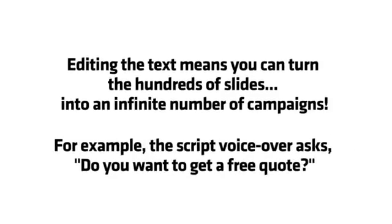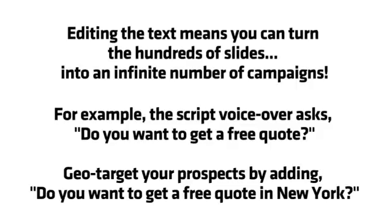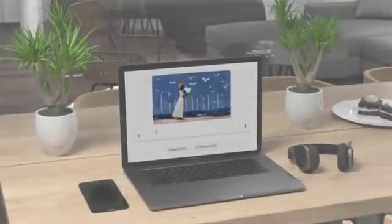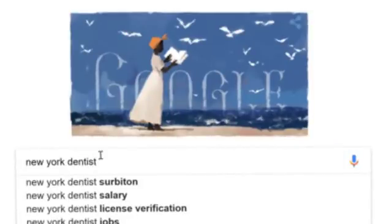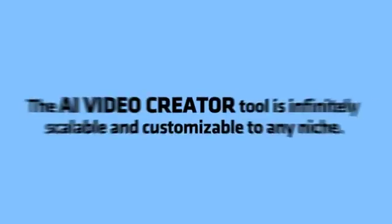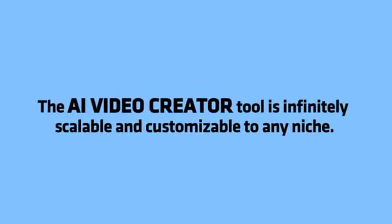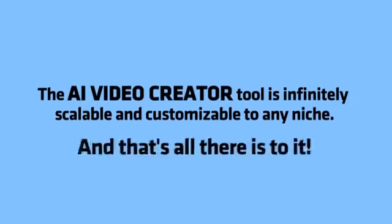Editing the text means you can turn hundreds of slides into an infinite number of campaigns. For example, the voiceover asks 'Do you want to get a free quote?' — geotarget your prospects by adding 'Do you want to get a free quote in New York?' or add an image of New York City, or show a video of someone searching for 'New York Dentist.' The AI Video Creator tool is infinitely scalable and customizable to any niche.